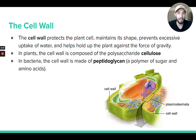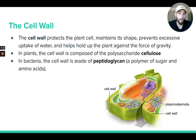Bacteria have a cell wall, but their cell wall is made of peptidoglycan, which is a polysaccharide. And then in plants, they have a cell wall — as in this picture here — and their cell wall is made of the polysaccharide cellulose. That's the cell wall, but remember animal cells do not have a cell wall.